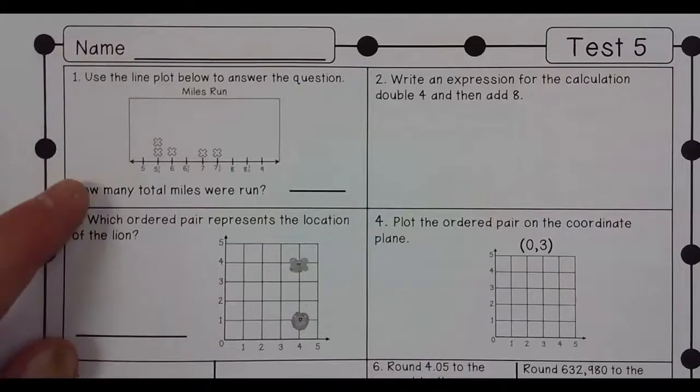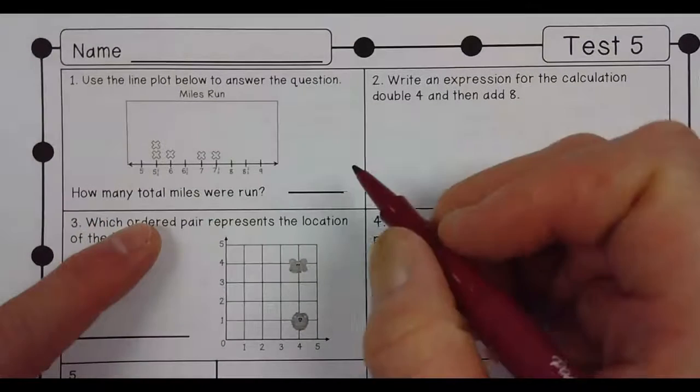Use the line plot below to answer the question. How many total miles were run? 31 and a half.